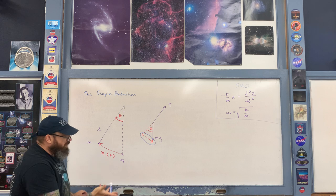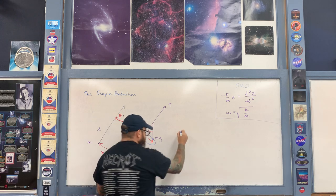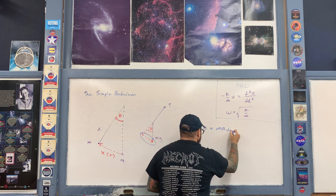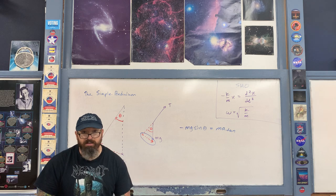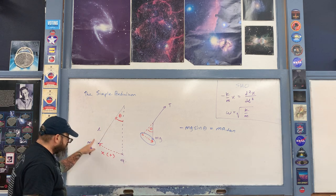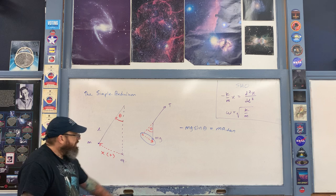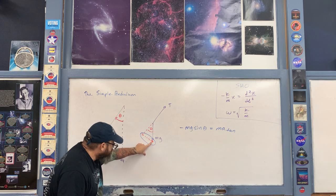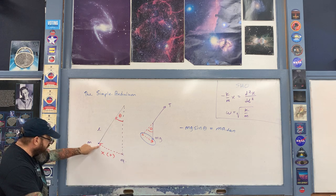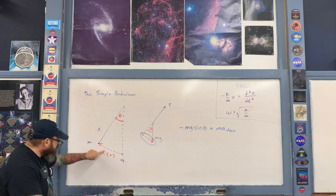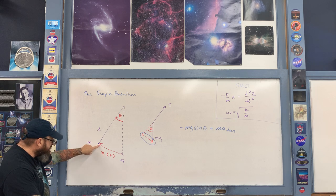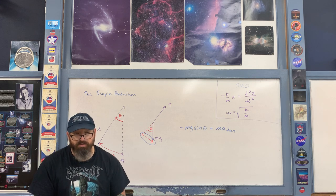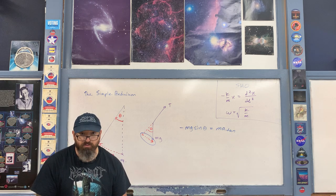Writing F equals MA in the tangential direction, we have only the component mg sine theta, where the acceleration on the right-hand side is the tangential acceleration along the circular arc. Notice the negative sign: the reason mg sine theta is given a negative sign is because it points opposite to what we defined as positive. By definition, displacement away from equilibrium is positive, and mg sine theta is a restoring force, so we treat it as negative — just as we do for the spring force.